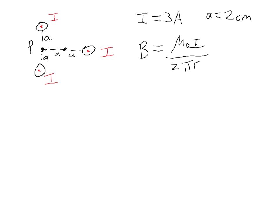This is an example problem showing how to calculate the magnetic field due to three parallel wires, all of which have the same current. We have three parallel wires, all carrying a current of 3 amps, and each separated by a distance of 2A, where A is two centimeters. The distance from the outer wire to point P is 2A.